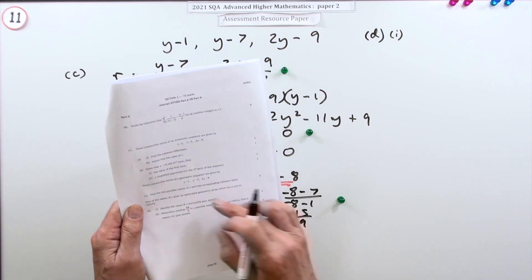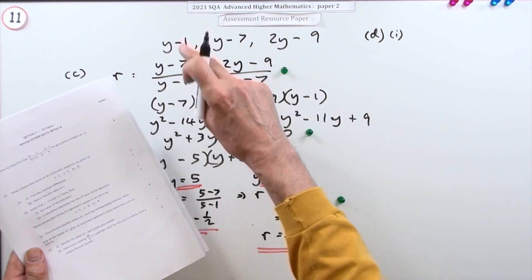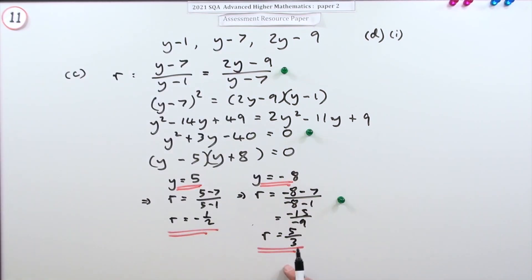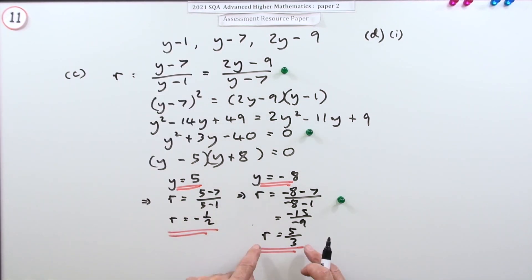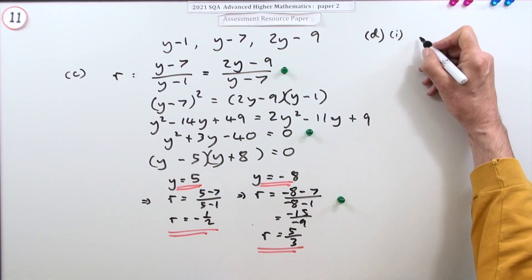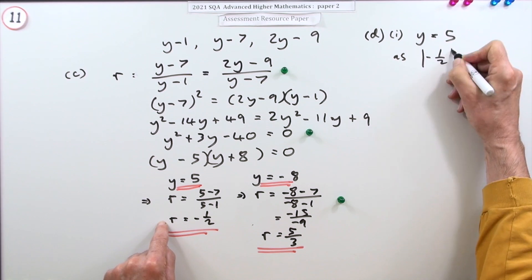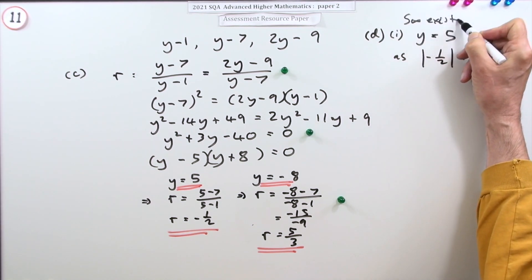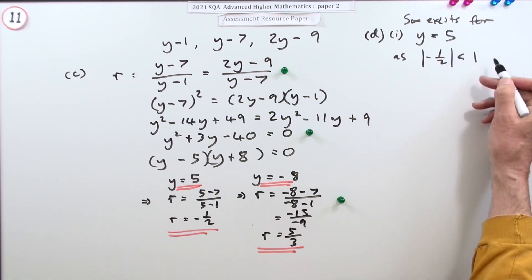Part d, part 1: one of the values of y gives a geometric series that has a sum to infinity. Identify the value of y. The only way to get a sum to infinity is if the terms get smaller and smaller, requiring multiplication by a proper fraction each time. If the ratio were 5/3, each term would get bigger and bigger. So the answer is y equals 5, because the absolute value of the common ratio, one half, is less than 1. That's worth one mark.